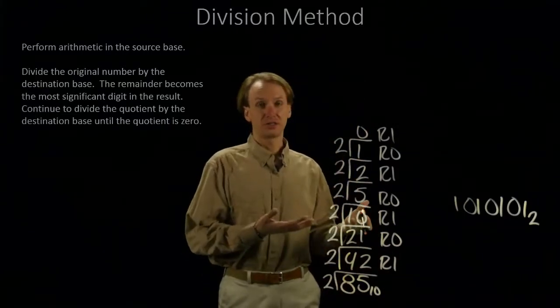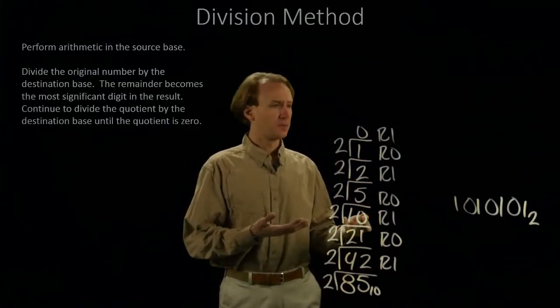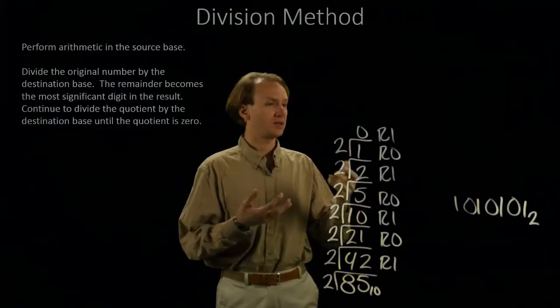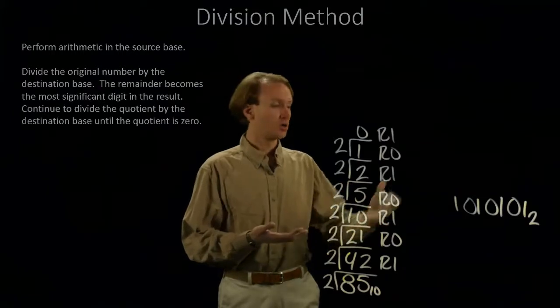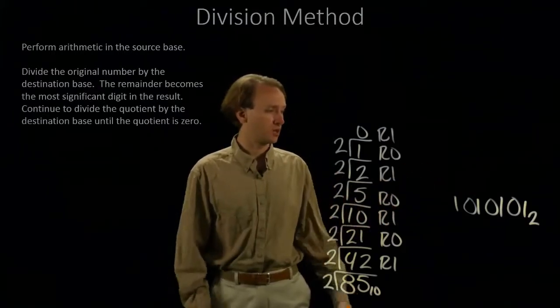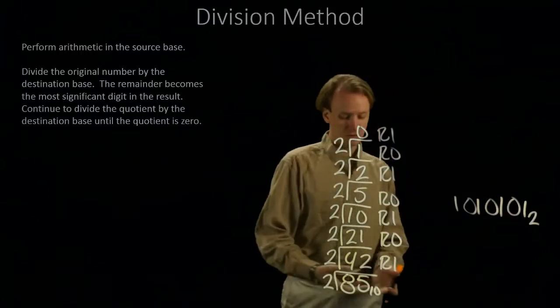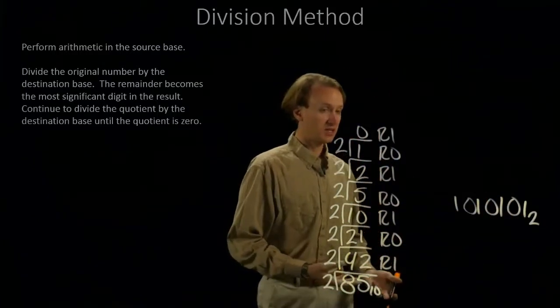Now, I can continue doing this division as much as I'd like, but my results are never going to change. 0 divided by anything is always going to give me 0, remainder 0. I just get an infinite number of 0s. This is my same number in binary as 85 in base 10.